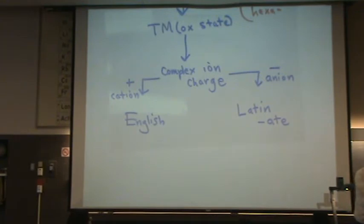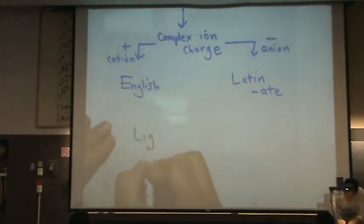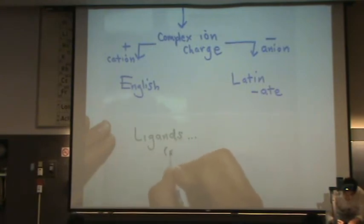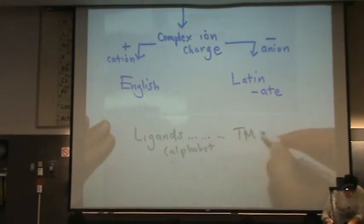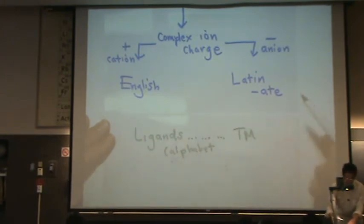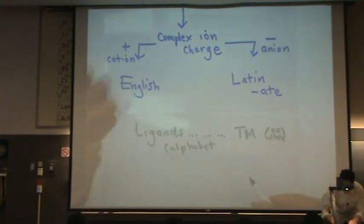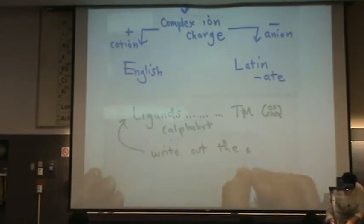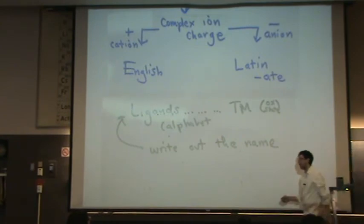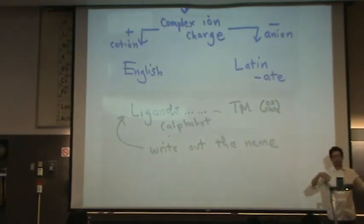So when you put it all together, you list all the ligand names in alphabetical order, then put the transition metal in English or Latin depending on whether it's a cation or anion, and then put the oxidation state in Roman numerals. For example: diamine tetrachloro iron(II).